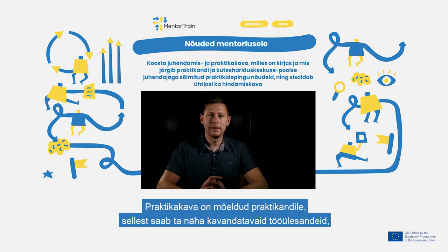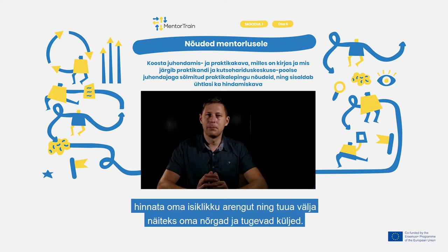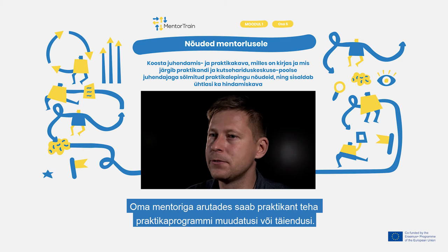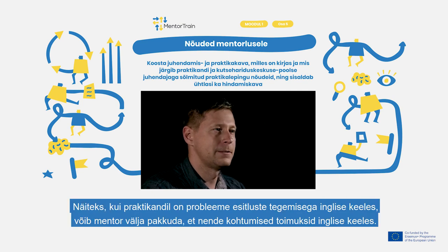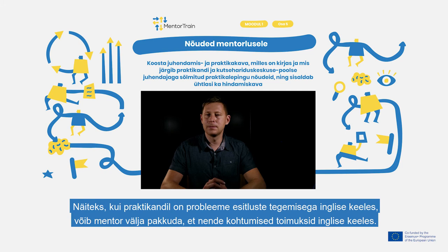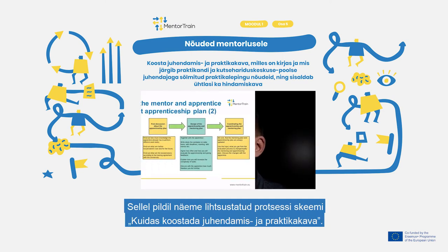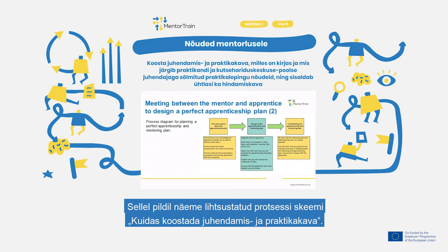The apprenticeship plan is for the apprentice, where they can see planned work tasks, evaluate personal development, and bring out weaknesses and strengths for discussion with the mentor. They can make changes or add something into the apprenticeship program. For example, when the apprentice has problems making presentations in English, the mentor can offer to have meetings in English.